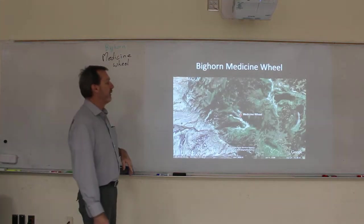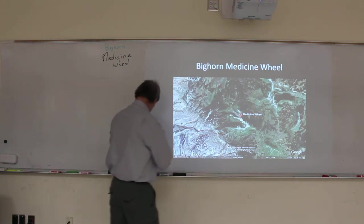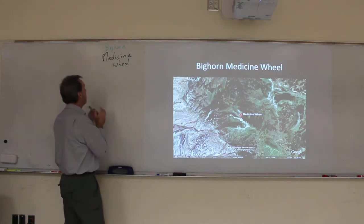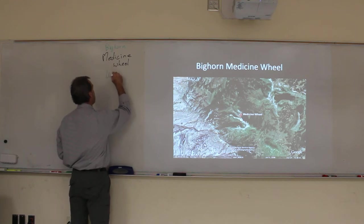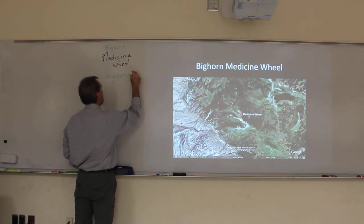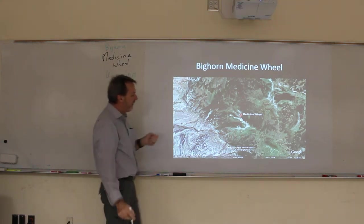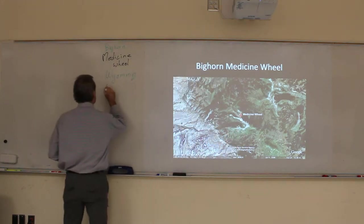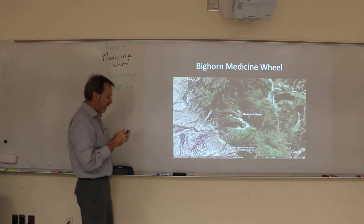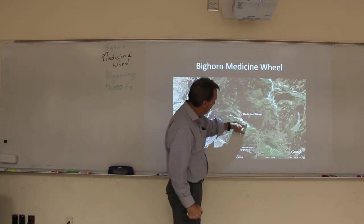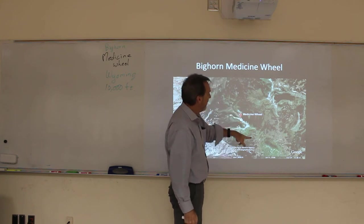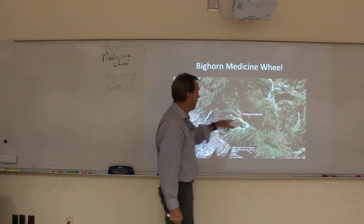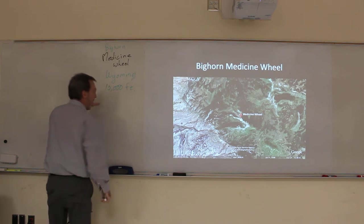The Bighorn Medicine Wheel is in the Bighorn Mountains in Wyoming, located very high up on a ridge at about 10,000 feet elevation. You can see this mountain ridge here. There's a dirt road that winds all the way back up to the top.